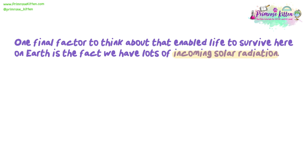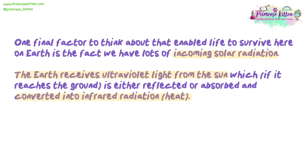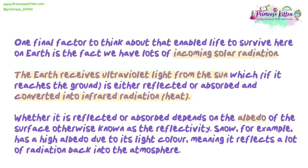One final factor to think about that enabled life to survive here on earth is the fact that we have lots of incoming solar radiation. The earth receives ultraviolet light from the sun which, if it reaches the ground, is either reflected or absorbed and converted into infrared radiation — heat. Whether it is reflected or absorbed depends on the albedo of the surface, otherwise known as the reflectivity. Snow, for example, has a high albedo due to its light colour, meaning it reflects a lot of radiation back into the atmosphere.